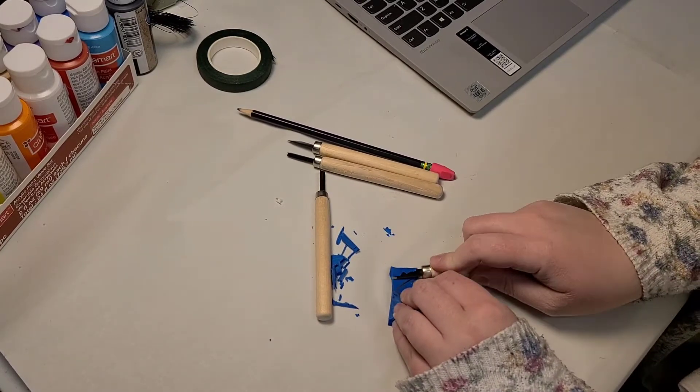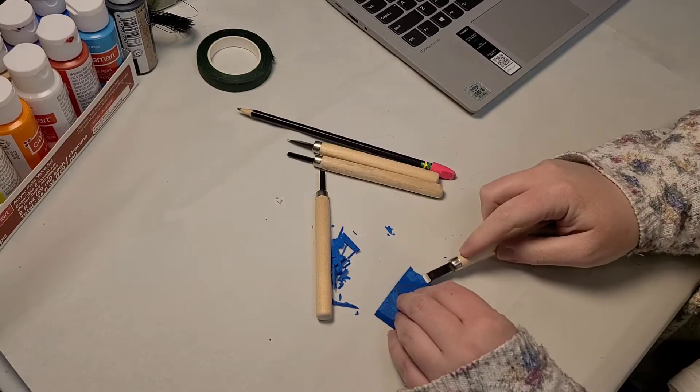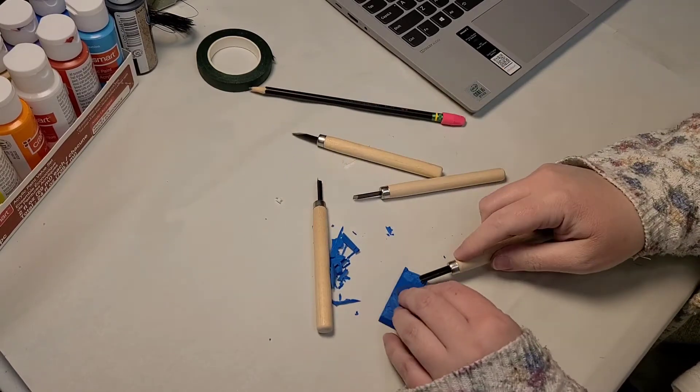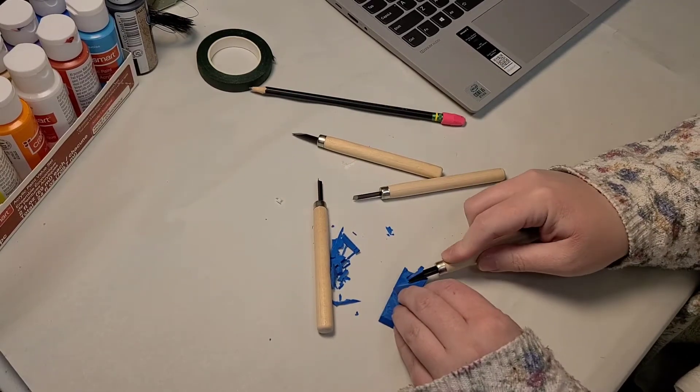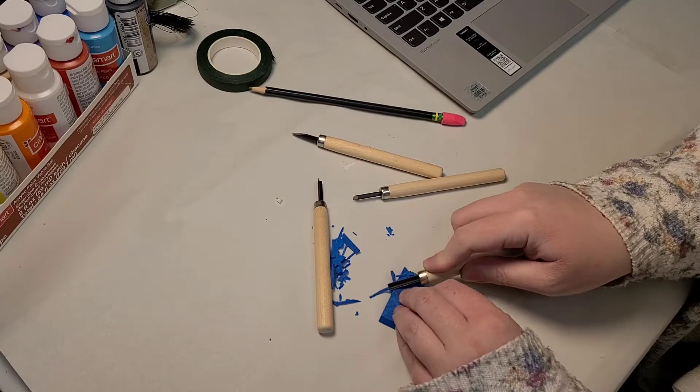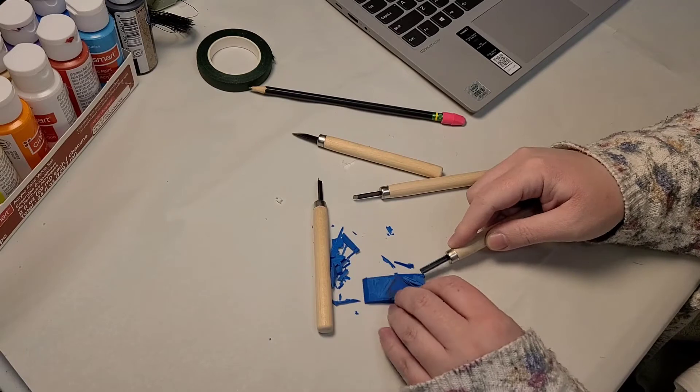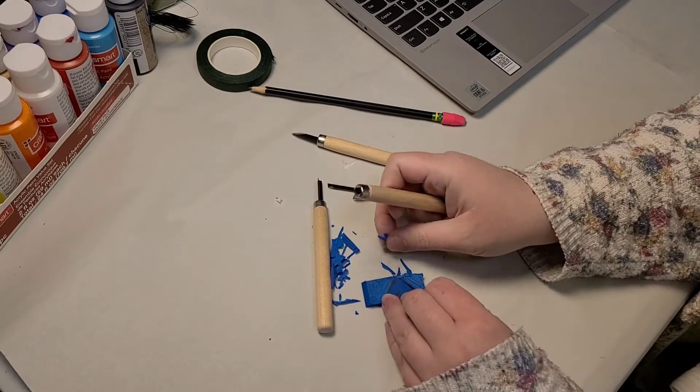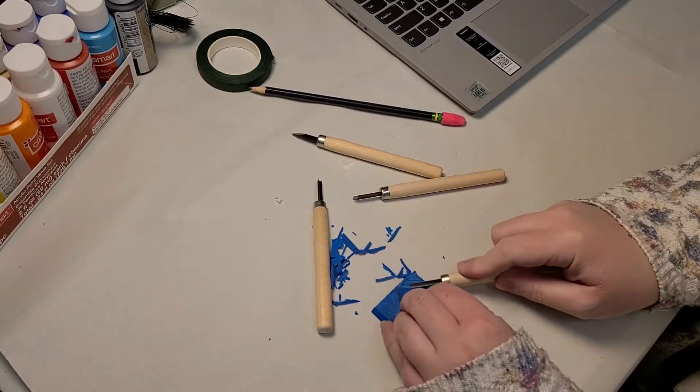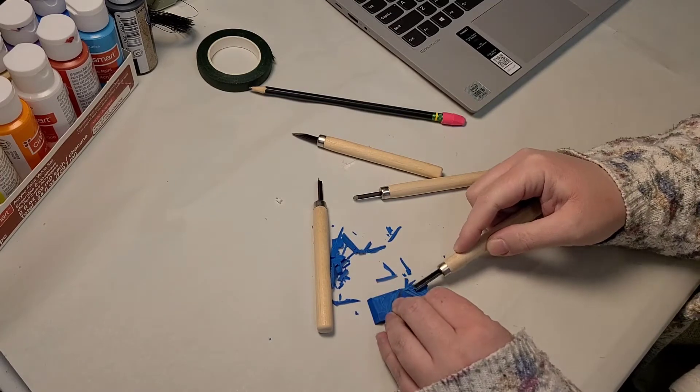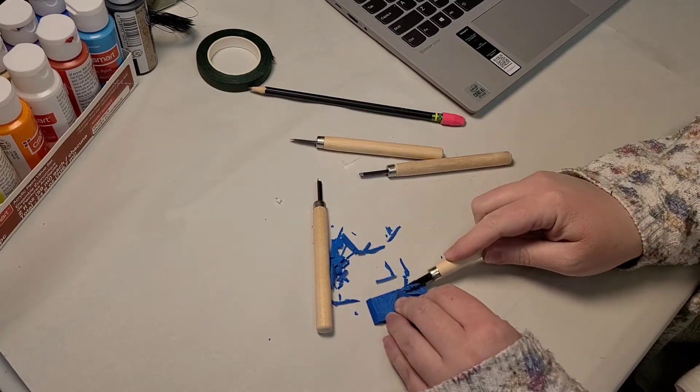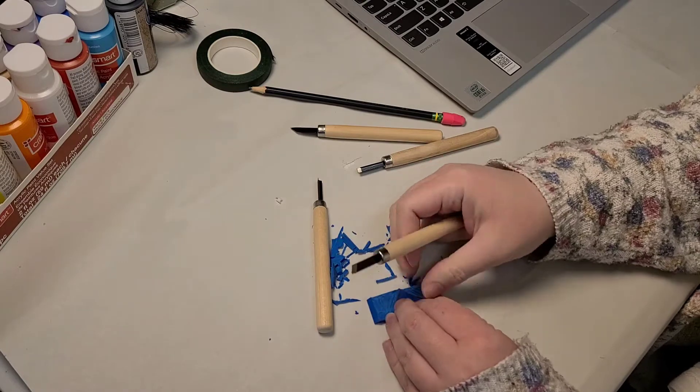So yeah, I did start by drawing out a basic design on the rubber stamp with a pencil. And now I'm just going through and carving out the design on the stamp. So I think this one is a heart. And I get really excited about it. It's just really satisfying. This is just a really satisfying craft.